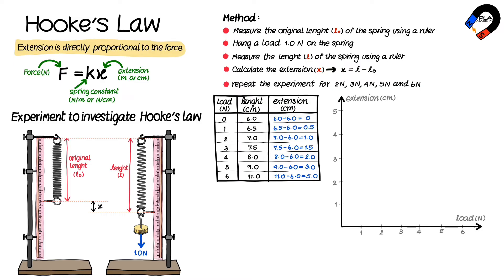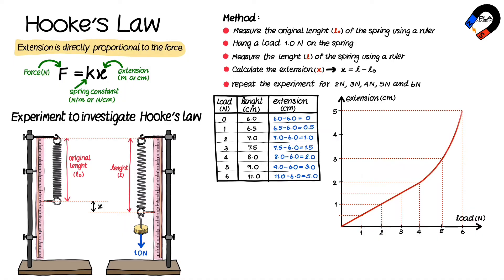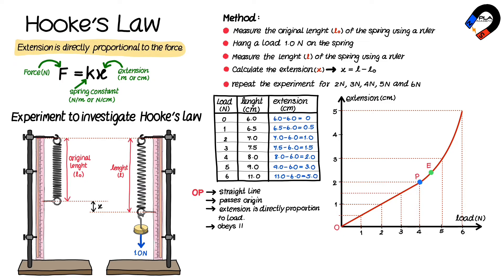Plot the graph of the extension in centimeters against the load in newtons as shown in the diagram. Draw a best fit line. We can conclude the results from the graph as follows: between O and P, it is a straight line that passes through the origin, which means that the extension is directly proportional to the load. This deduces that the spring obeys Hooke's law.